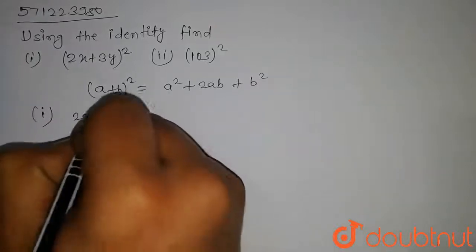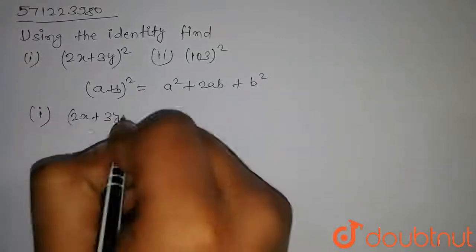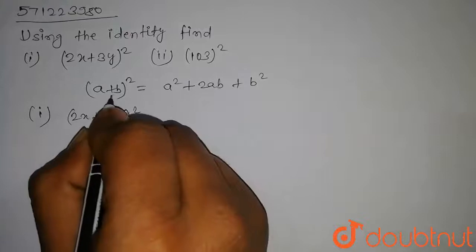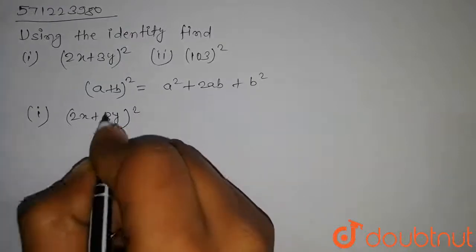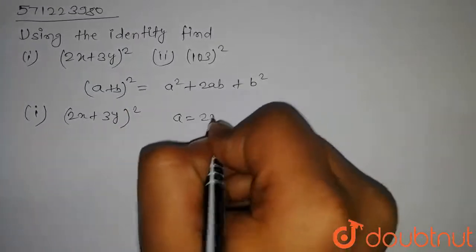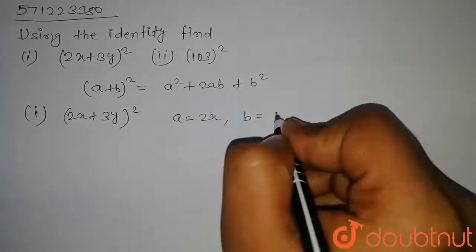Our first part of the question is (2x + 3y)² whole square. Now, on comparing this with our formula, we get a equal to 2x and b equal to 3y.